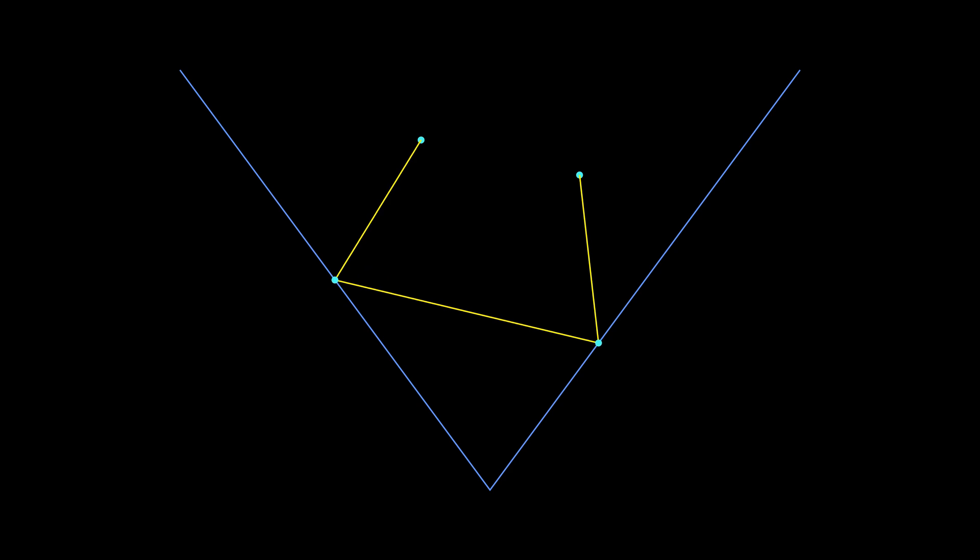Let's do the same thing we do in Fermat's problem. Reflect fixed points over the sides of the angle. Now we can transfer these two line segments and further focus on the new polyline with the same length, so right now think about where should we place the points.